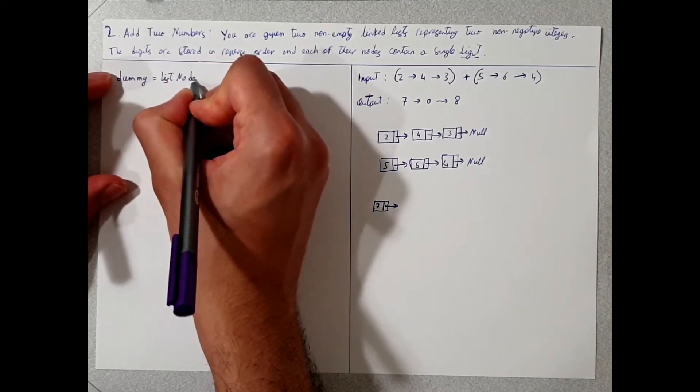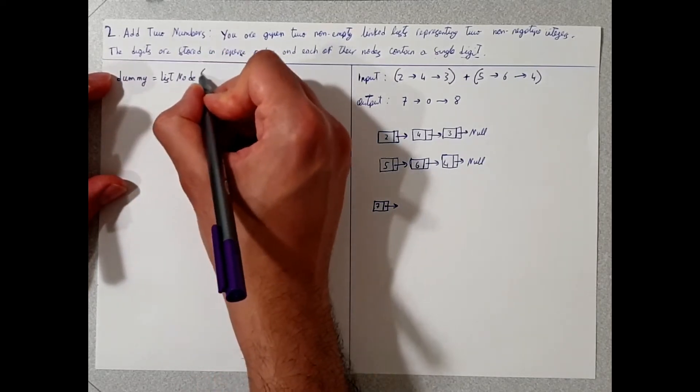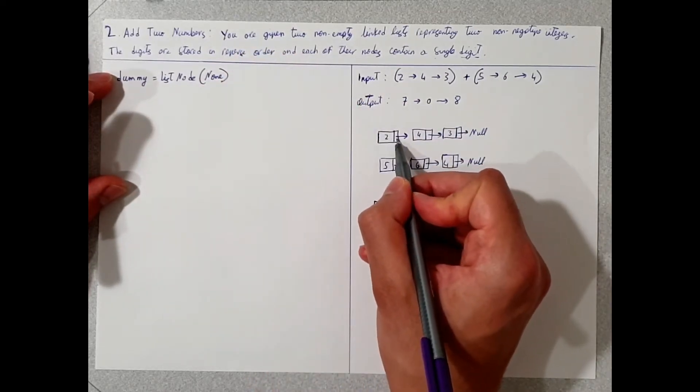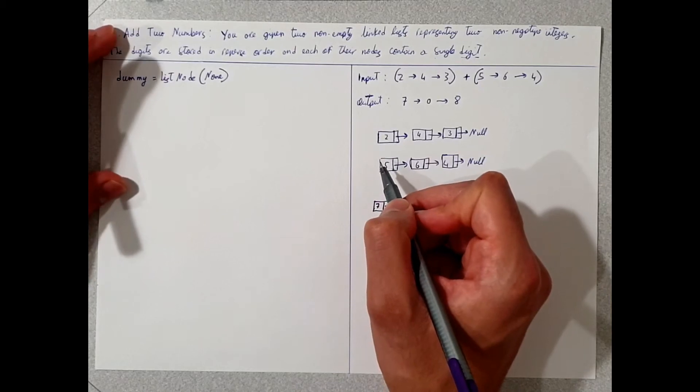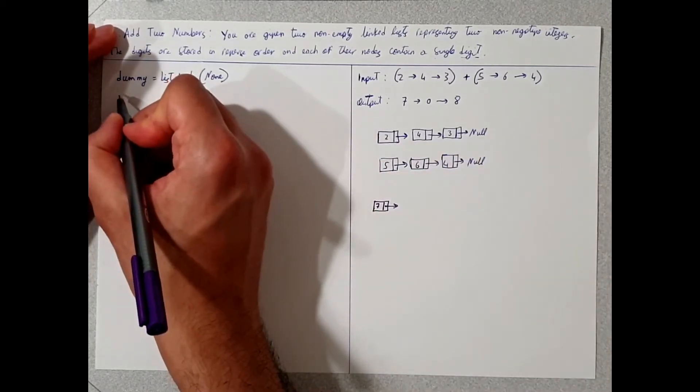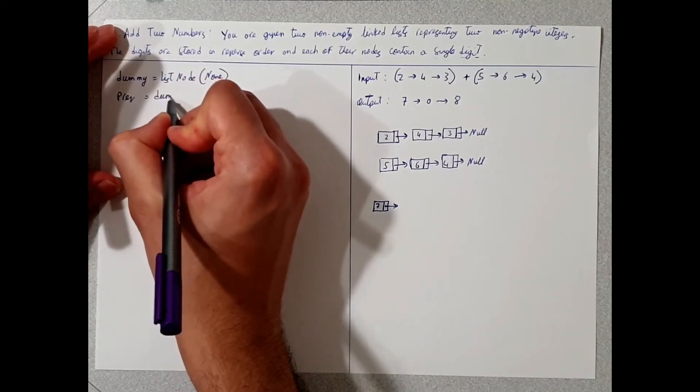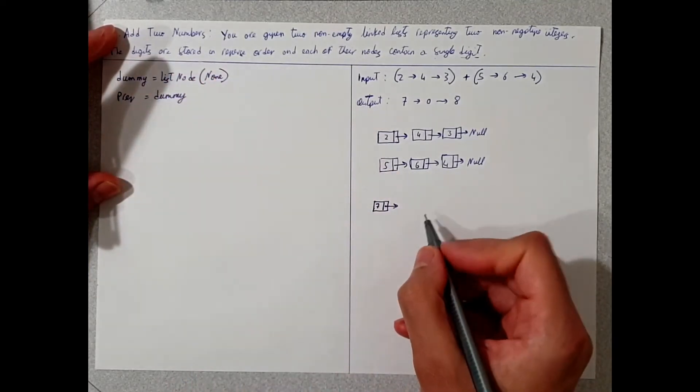I explained the list node in a previous video, so if you want to look into that. Basically, a list node contains the value and a pointer to the next item in the list node. And then we point the previous to this dummy, so we create a pointer and we call it previous, or prev in this case,